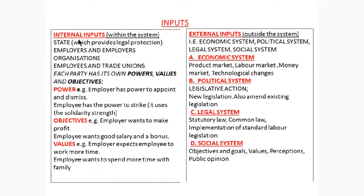The third party is the employees and trade unions. In terms of the internal input, each party has its own powers, values, and objectives. For example, the employer has the power to appoint and dismiss. On the other hand, the employee has the power to strike, using solidarity strength, because the individual employee cannot strike alone. They should form part of a group or be part of the trade union to be able to confront the employer.